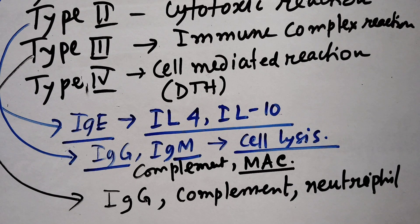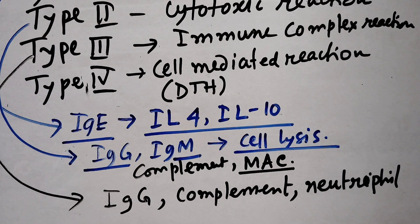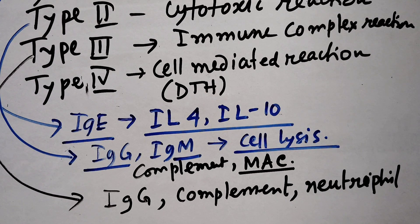The antigen-antibody interaction in Type 3 involves agglutination. This antigen-antibody interaction process is very specific. IgG interacts with the antigen in what is called the agglutination process — the antigen-antibody interaction process.